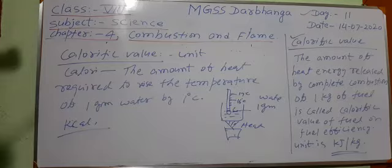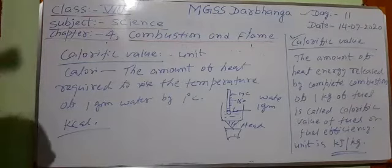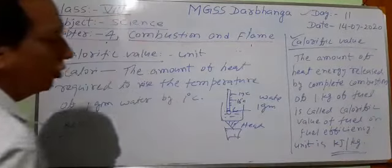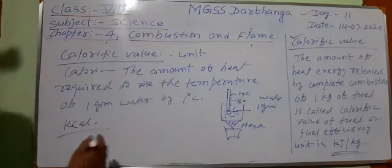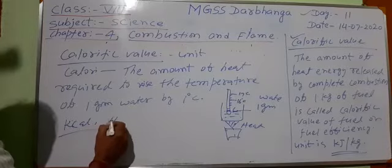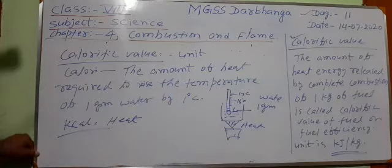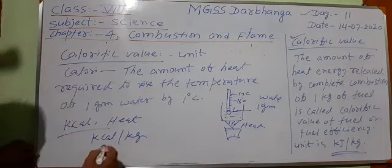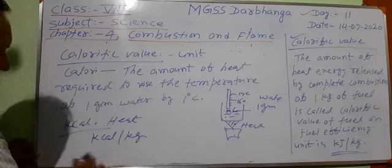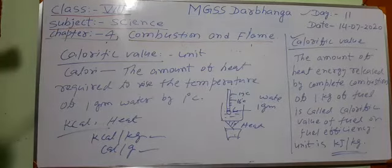The calorific value consists of two units: one is the unit of heat and the other is the unit of mass. For example, kilojoule per kg — here kilojoule is the unit of heat. To write the unit of calorific value or heat efficiency, we write kilocalorie per kg, or gram calorie per gram. These are the different units of calorific value.